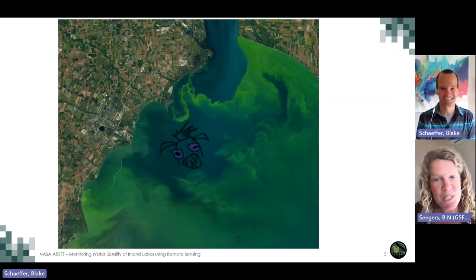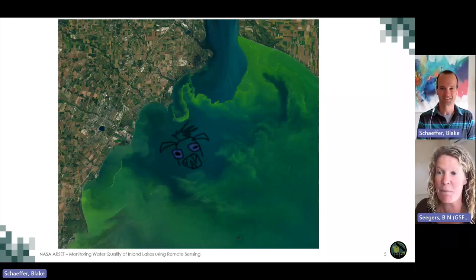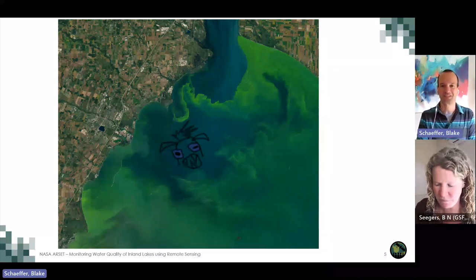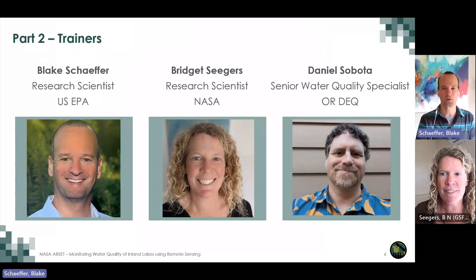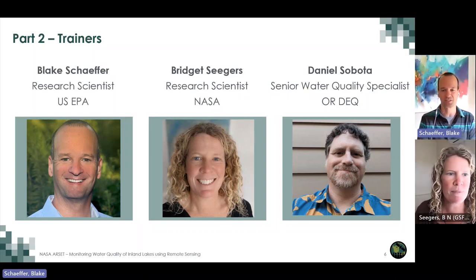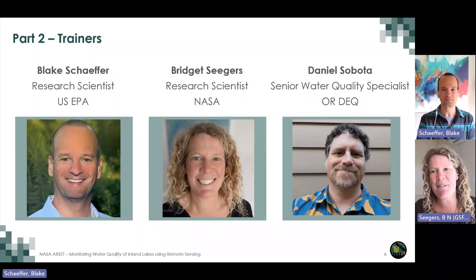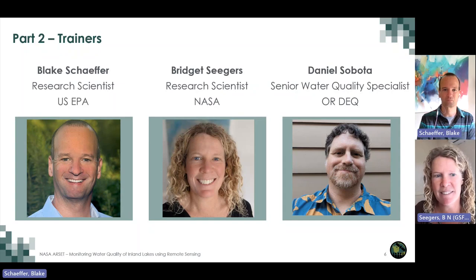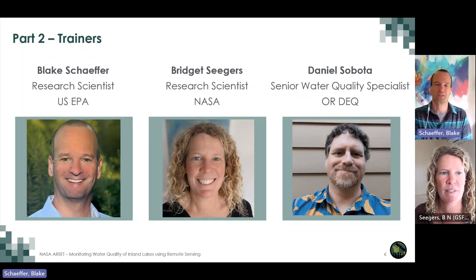It's not one swamp monster, but millions of tiny cyanobacteria that multiply and multiply until there are millions in one teaspoon of water. Welcome to the NASA RSET training — Monitoring Water Quality of Inland Lakes Using Remote Sensing, Part 2 on the Cyanobacteria Assessment Network. I'm Blake Schaeffer, a research scientist at the U.S. Environmental Protection Agency. And I'm Bridget Seegers, a research scientist in NASA's Ocean Ecology Lab. Later, we'll be joined by our special guest Daniel Sobota from the Oregon Department of Environmental Quality. Today, we're going to be talking about cyanobacteria in U.S. lakes and how we can monitor them using satellite technology.